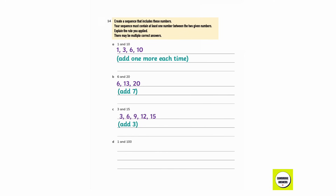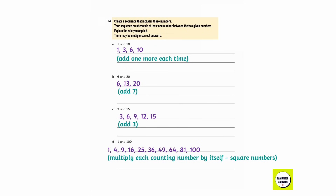For 1 and 100: we can write 1, 4, 9, 16, 25, 36, 49, 64, 81, 100. Multiply each counting number by itself — these are square numbers. 2×2=4, 3×3=9, 4×4=16, 5×5=25, 6×6=36, 7×7=49, 8×8=64, 9×9=81, and 10×10=100.